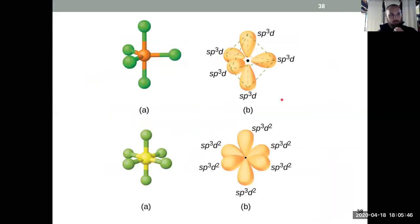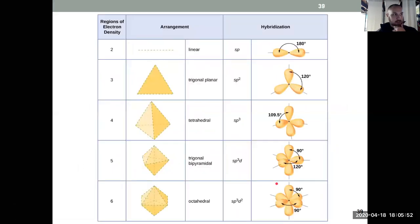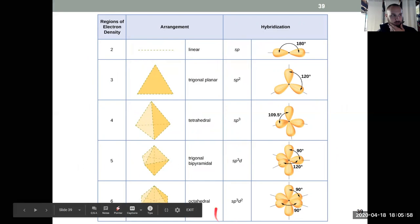And that's what these guys end up looking like, sp3d, sp3d2. All of that information is summarized nicely on this table. And we see now that the hybridizations control our shapes: linear, trigonal planar, tetrahedral, trigonal bipyramidal, and octahedral.